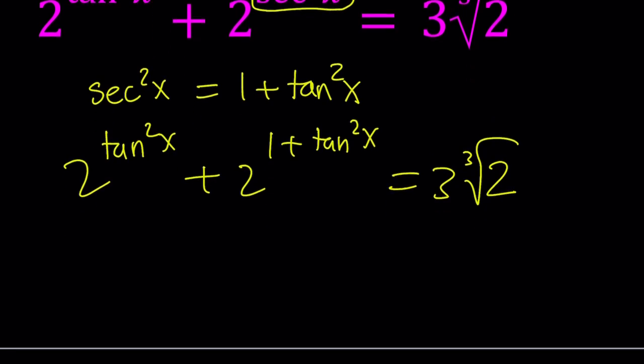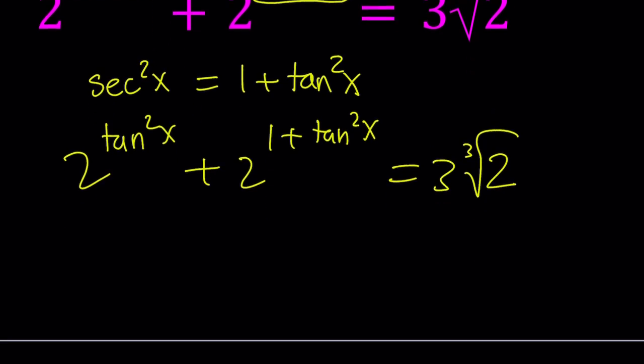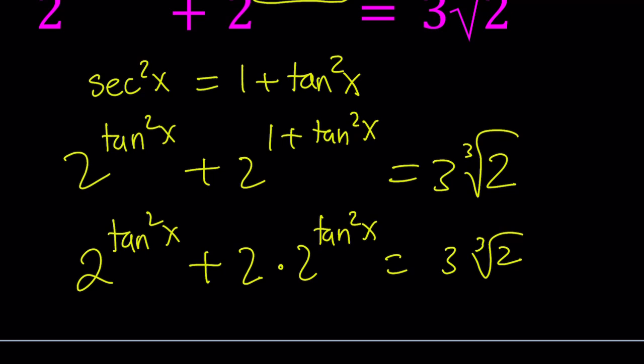Now here's what we're going to do. We're going to go ahead and split up the exponents here. We can write this as 2 to the power tangent squared x plus 2 to the first power times 2 to the power tangent squared x. So I can put the one there if you want, but that's not necessary. So now we can keep the right hand side as is.